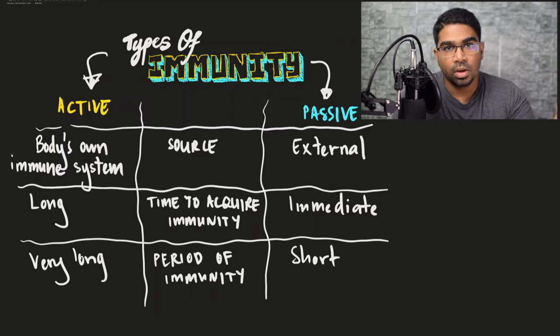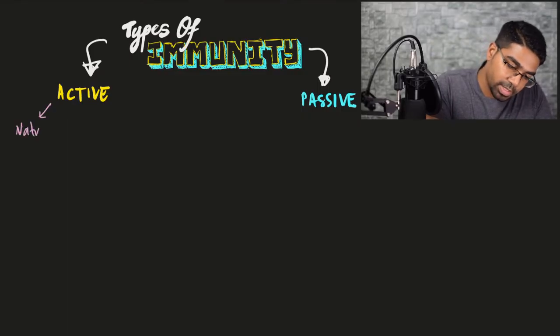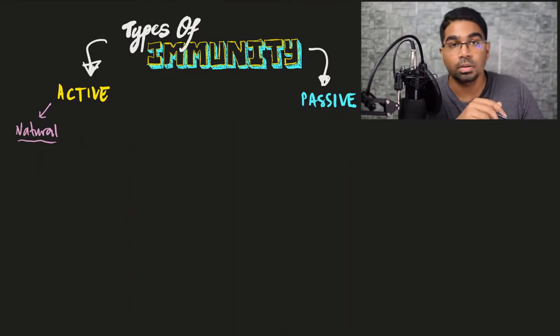When our own body produces the antibodies it is active; when produced externally and introduced into our bodies it is passive immunity. Within active and passive immunity there is a further classification: natural or artificial. Natural active immunity is when we get an infection — a pathogen enters the body, body cells recognize it as a foreign antigen, and white blood cells produce antibodies against it.